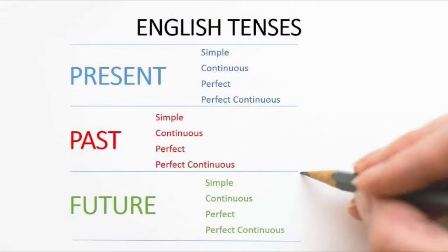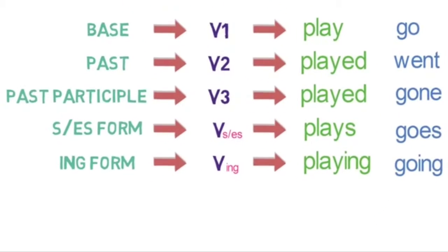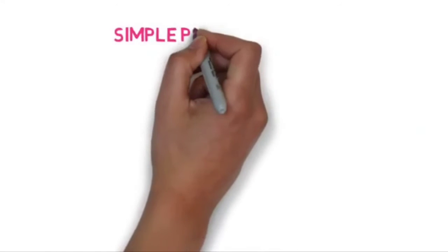According to the second, past: past simple, past continuous, past perfect, and past perfect continuous. For future: simple future, future continuous, future perfect, and future perfect continuous. In this session, we are going to see the simple tenses — that is, simple present, simple past, and simple future.